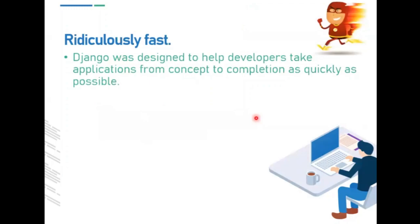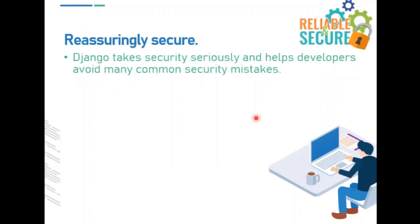So why Django? One of the characteristics of Django is that it is ridiculously fast. Django was designed to help developers take applications from concept to completion as quickly as possible — we can make web applications faster using the Django framework. It is also reassuringly secure; Django takes security seriously and helps developers avoid common security mistakes.